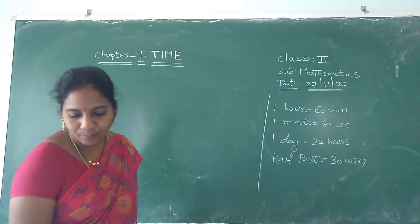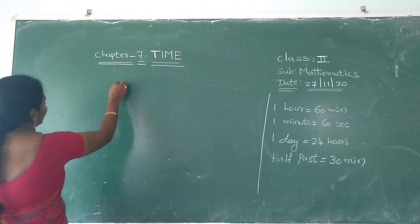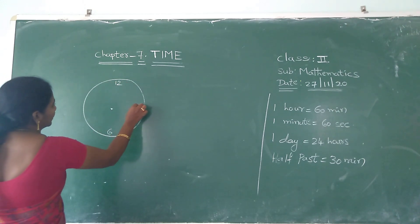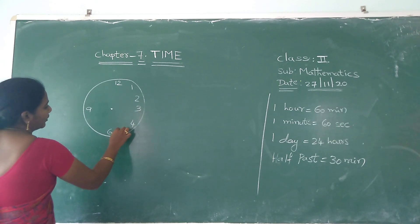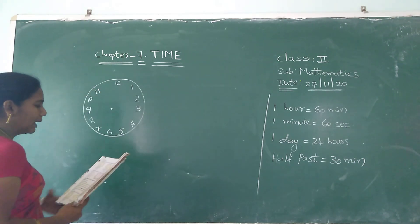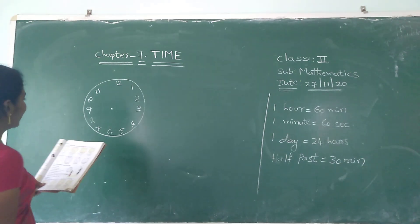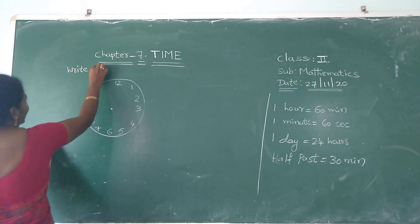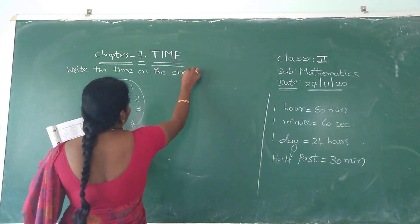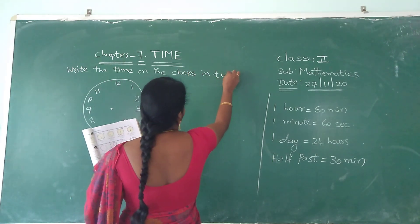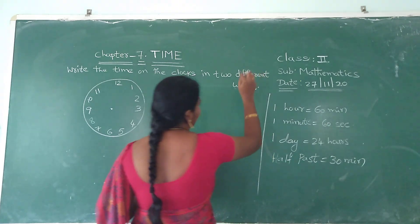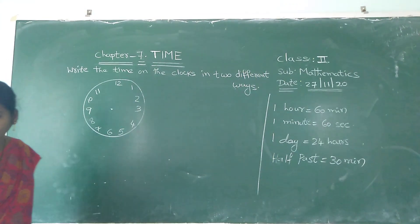So here is an exercise they gave. You have to see the board. You have to look at the board. See how you have to draw the clock as shown on the board. Whenever you are drawing, look at the board properly. Now you have to write the time on the clock in two different ways. Write the time on the clocks in two different ways.